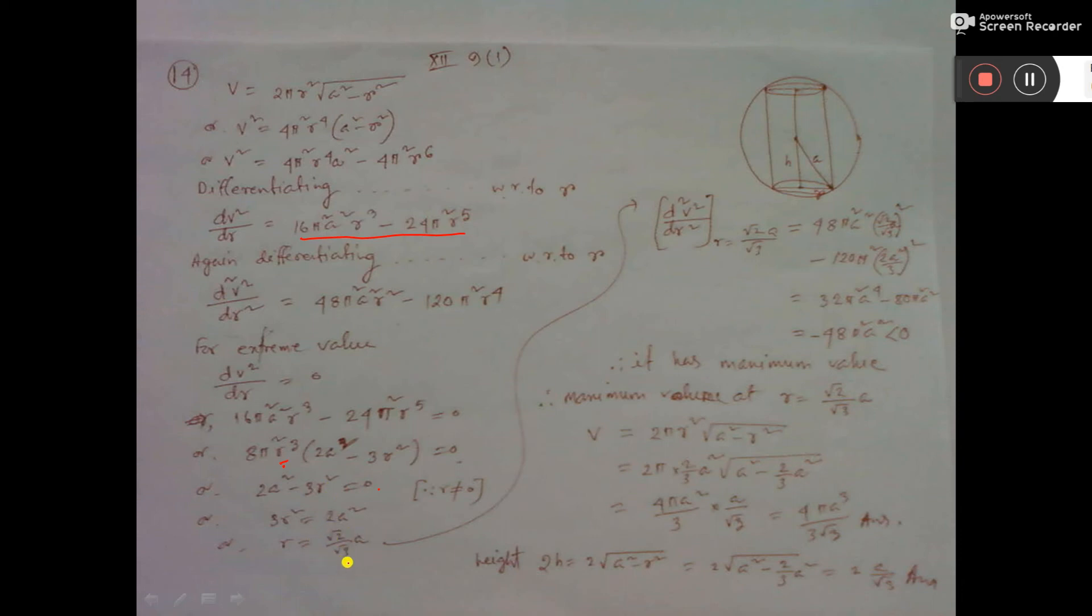This is the value of r we have got. Now, the testing part. In this double differentiation, you put the value of r. And see, a big calculation, and here it is coming negative, that is less than 0. Now, less than 0 means it has maximum value. And the maximum value at what point? At the point this.